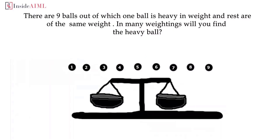The next question is a trick question. There are nine balls, out of which one ball is heavy and the rest are of the same weight. In how many weighings will you find the heavy ball? The correct answer is two. You must also explain how. First, take six balls and place three on each side of the weighing scale. There are two possible situations.